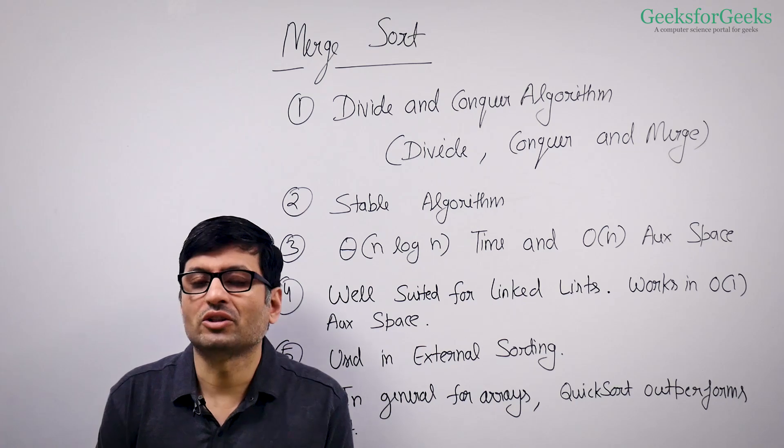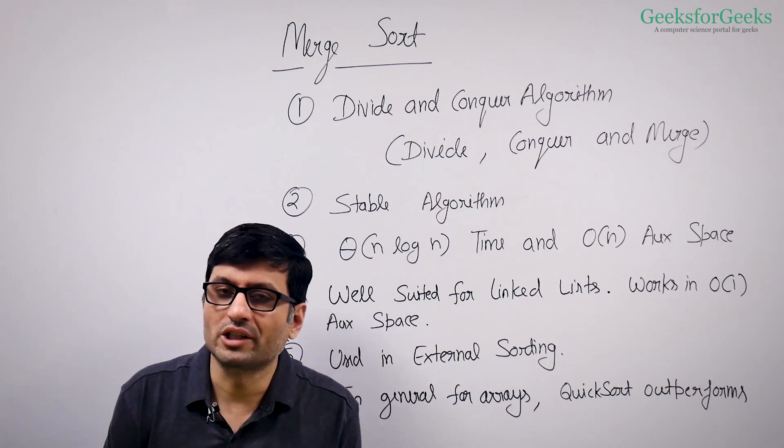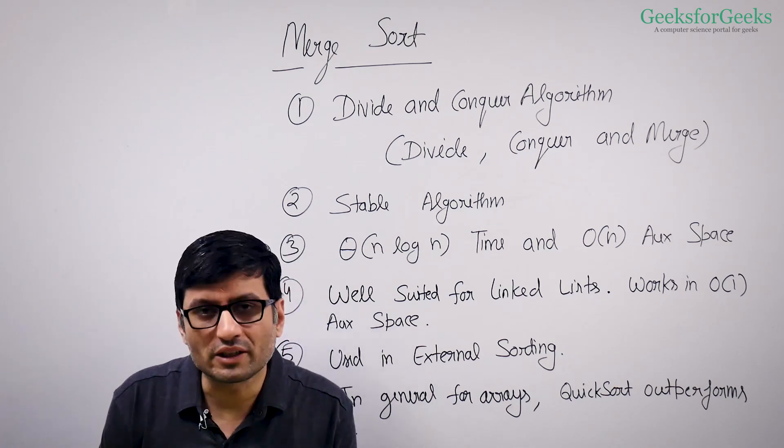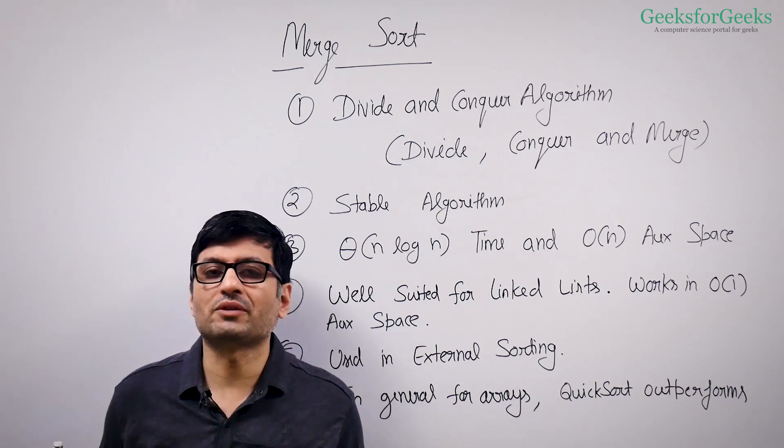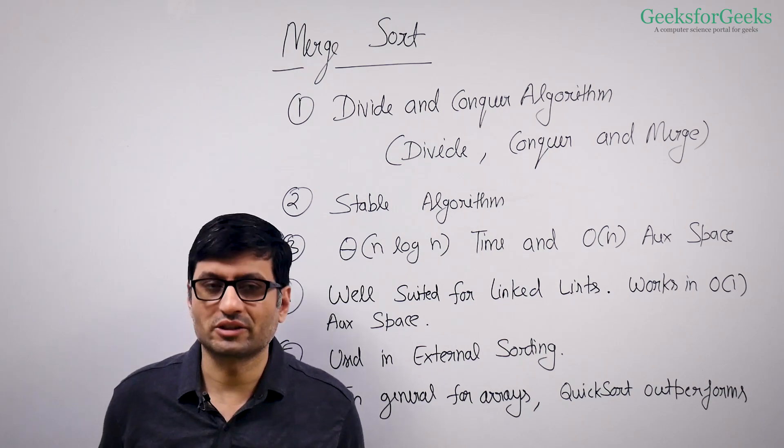It first divides your input array or list into two parts. Then it recursively sorts these two parts, and after sorting these two parts, it merges them.